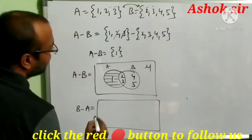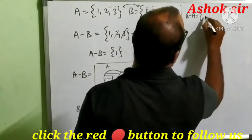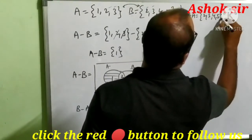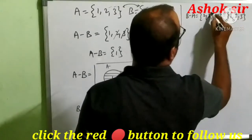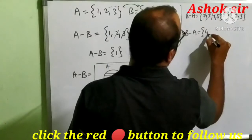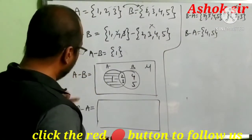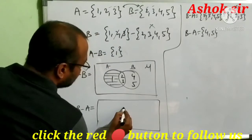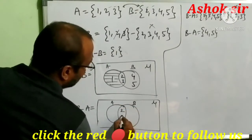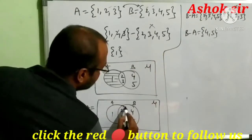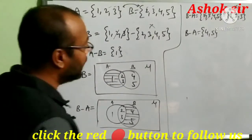Now similarly, what about B minus A? B minus A: write B = {2, 3, 4, 5} minus A = {1, 2, 3}. The common elements are 2 and 3, so cancel them. B minus A = {4, 5}. In the Venn diagram, we take the universal set with overlapping circles — common elements 2, 3 in the middle, 1 in A's exclusive part, 4 and 5 in B's exclusive part. B minus A means only the B-exclusive part, so we shade that region. This is A minus B and this is B minus A.